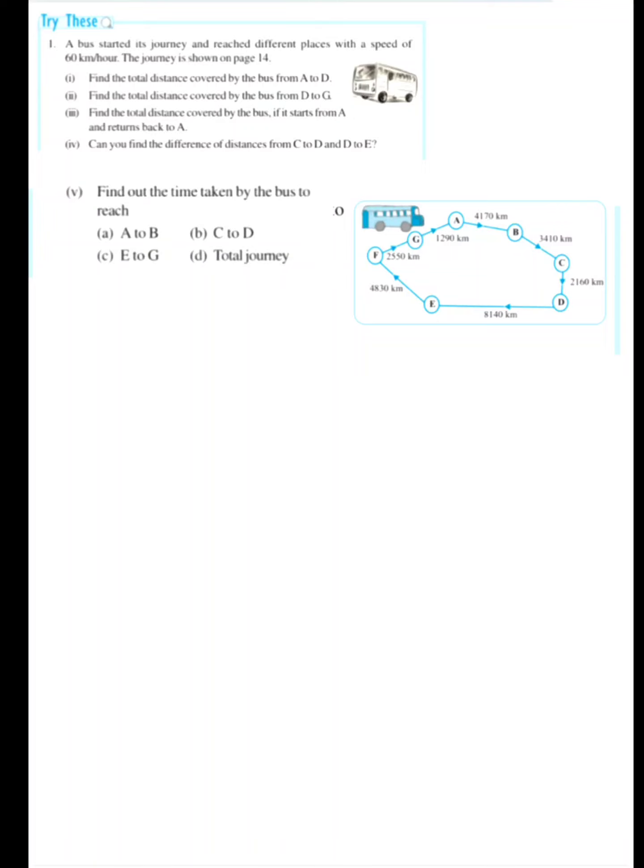Good morning. Today we will be discussing the questions under the heading 'Try This' on page number 13. Our first question: a bus started its journey and reached different places with a speed of 60 km per hour. The journey is shown on page 14. Find the total distance covered by the bus from A to D.